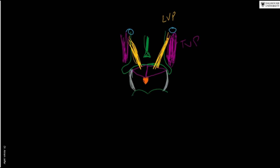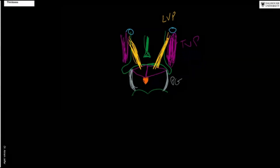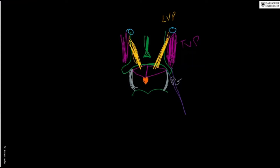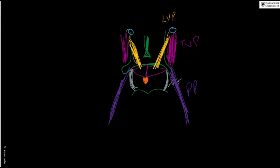This is the palatoglossus muscle. There is also another muscle that goes down from the soft palate to the pharynx, more posteriorly — this is the palatopharyngeus muscle. At this location is the tonsillar fossa, and the palatine tonsil is located in between them.